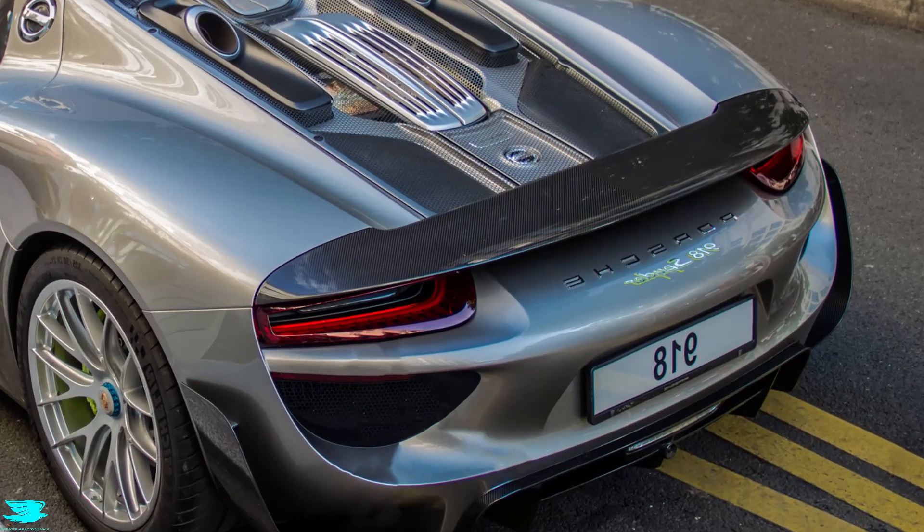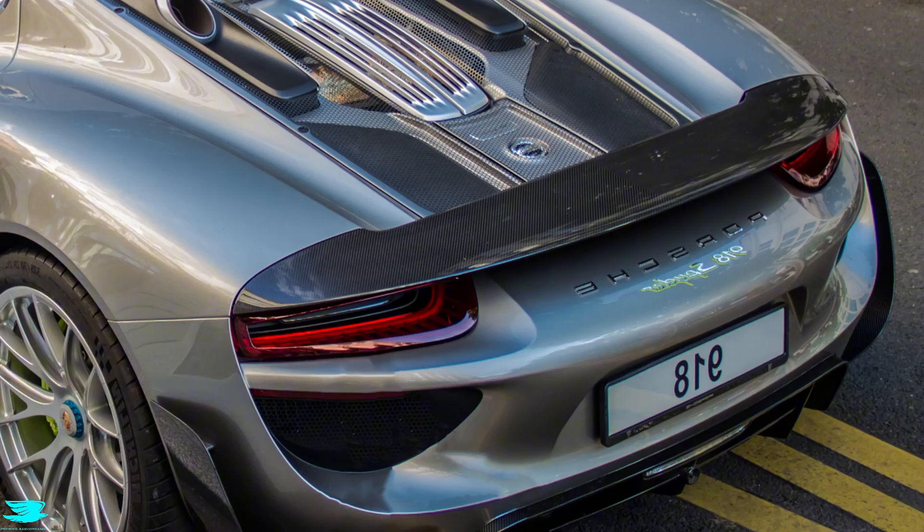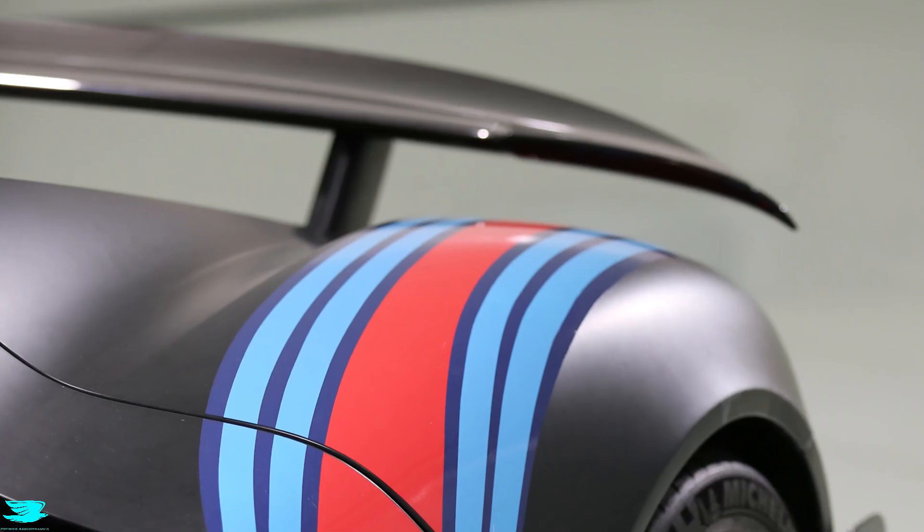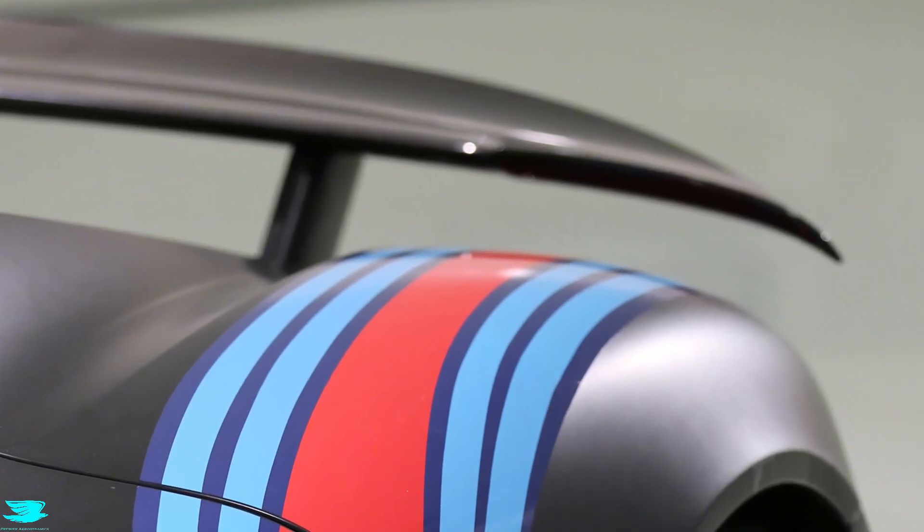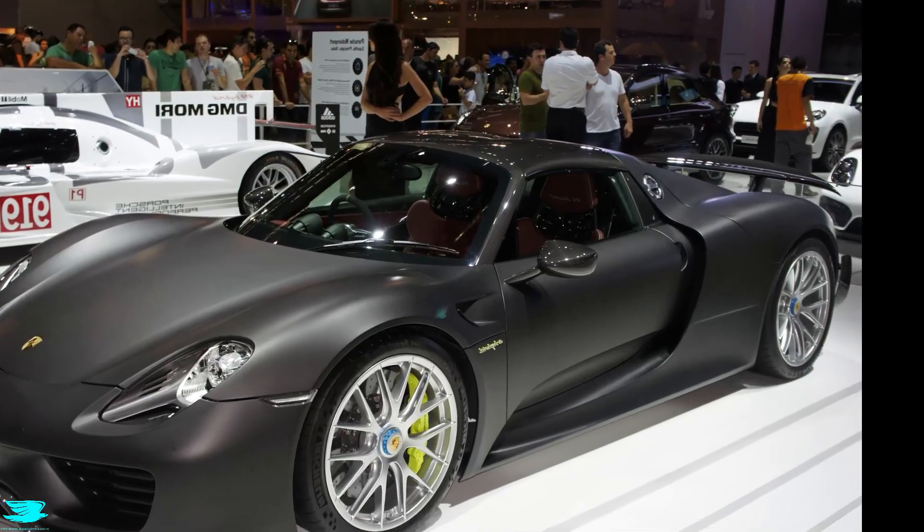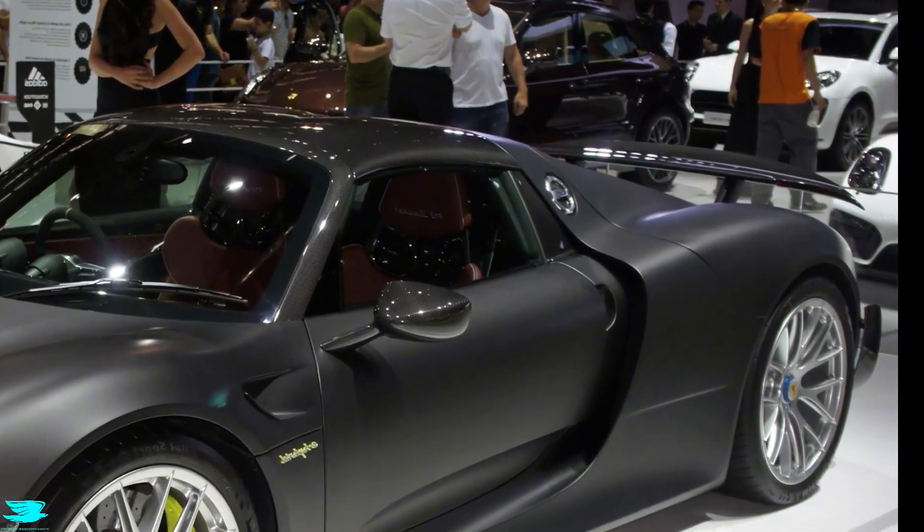Now we come to the rear wing, which is an interesting one because it can be placed at different heights depending on how much downforce you want. If you want more, you can jack it up really high and get into clean flow. That way the wing can operate as efficiently as it can.